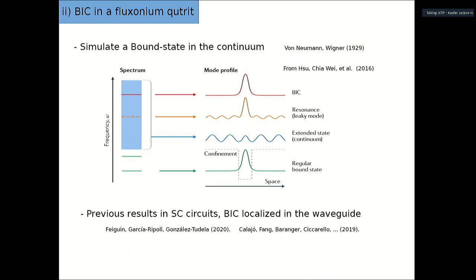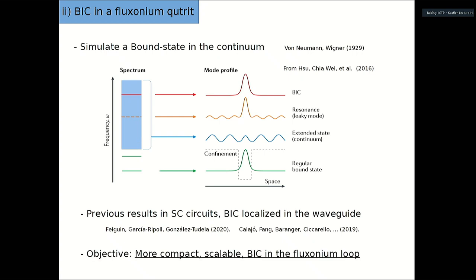BICs have been extensively analyzed in photonic frameworks and there have been some works in superconducting circuits. The works I'm most aware of constructed a BIC from the field in a waveguide. They used a qubit to impose the correct boundary conditions, localizing the field in part of the waveguide — but not very compactly, since it can be localized in a large portion of the waveguide. What we are trying to do is make a more compact BIC, localized in the fluxonium loop — a much smaller region — with the hope that it is scalable for applications.